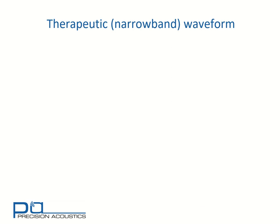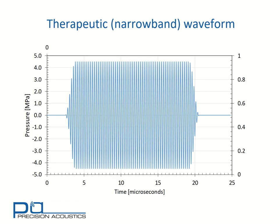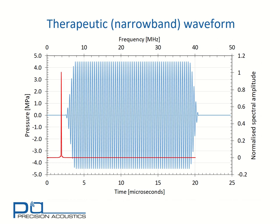It's also important to consider the sort of waveforms that we may be looking at. We'll now consider a therapeutic waveform, which is typical of a narrowband waveform. Here we can see we have many cycles, all at the same sort of frequency. In fact, the frequency spectrum for this waveform is a very narrow, almost delta function at the frequency of interest.